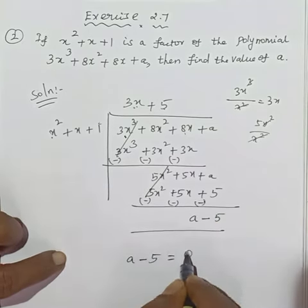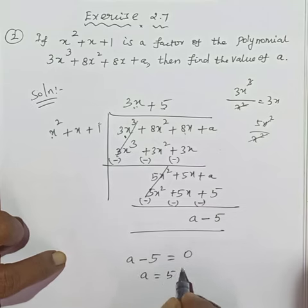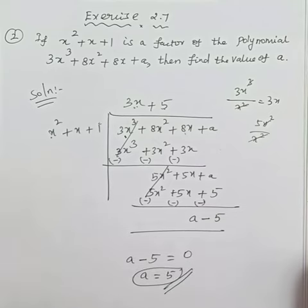So a minus 5 equals 0. Therefore a equals 5. This is the answer. Thank you.